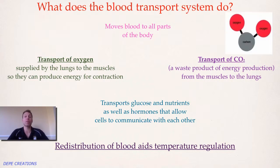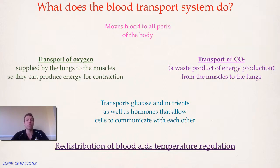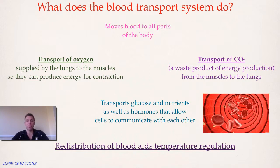Blood also removes waste products — carbon dioxide being the most obvious, as it's a by-product of aerobic respiration — and that moves from the muscles to the lungs in the blood. The blood transport system also allows us to transport things like glucose, nutrients, and hormones that allow cells to communicate with each other.